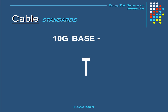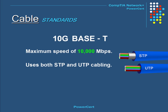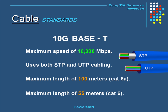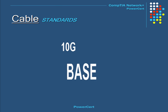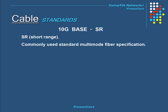Moving on to the 10 gigabit standard, there is 10GBASE-T, which has a speed of 10,000 megabits per second or 10 gigabits per second. Developed in 2006, it uses both shielded and unshielded twisted pair cabling. It has a maximum distance of 100 meters using Category 6A cabling, or 55 meters using Category 6. Next is 10GBASE-SR, where SR stands for short range — a commonly used multi-mode fiber optic specification with a maximum length of 300 meters.